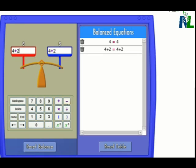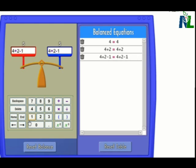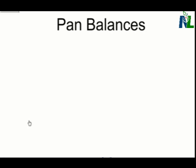And that works the same way if I subtract numbers from the left. So I subtracted 1. I've got to subtract 1 from the right pan. And then they're back in balance. So we can use this idea to solve algebraic equations.